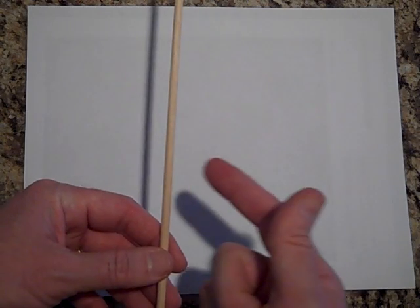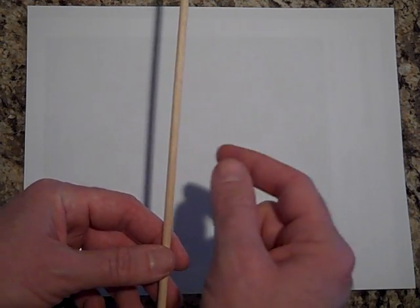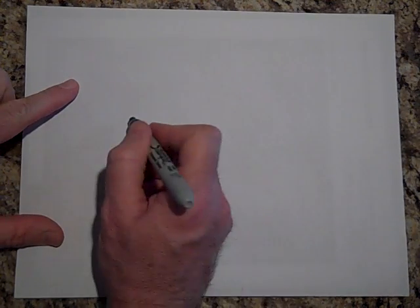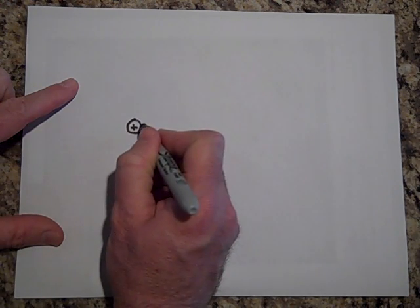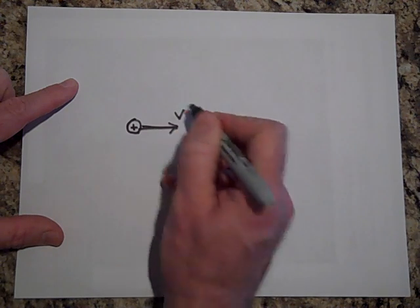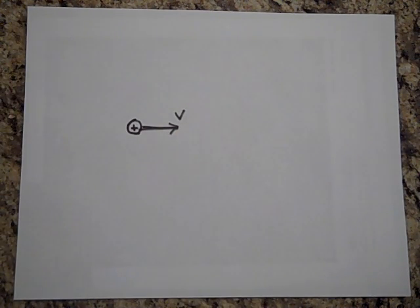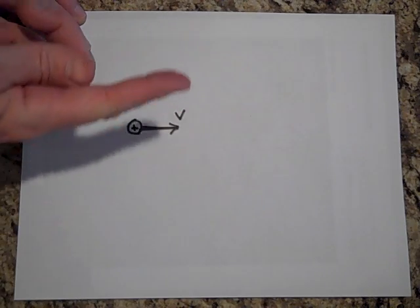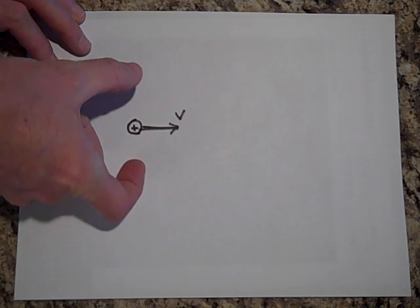The greater the current, the greater the field. Also, how close you are to the wire matters — the closer you get to the wire, the bigger the magnetic field. A moving point charge also has a magnetic field attached to it. If a positive charge is moving with speed v, you again get circular magnetic fields: put your thumb in the direction of motion and your fingers curl to show the field circling around.